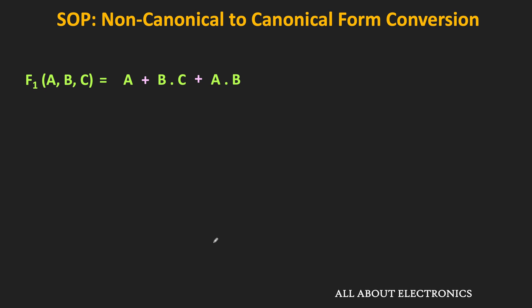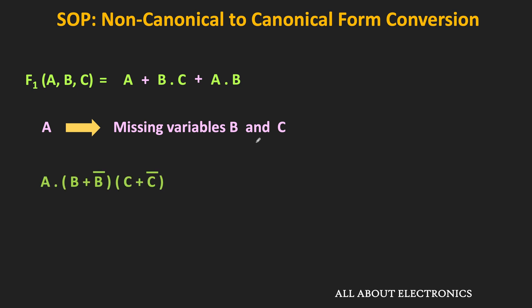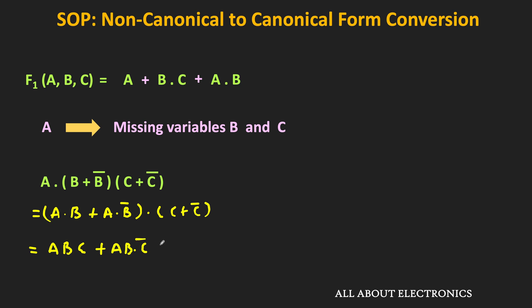In this example, the expression is also in non-canonical form because each product term does not contain all the variables of the function. In the first term, variables B and C are missing. So let us include those variables and expand this term. We can write this term as A·(B + B̄)·(C + C̄), which simplifies to A·B·C + A·B·C̄ + A·B̄·C + A·B̄·C̄.